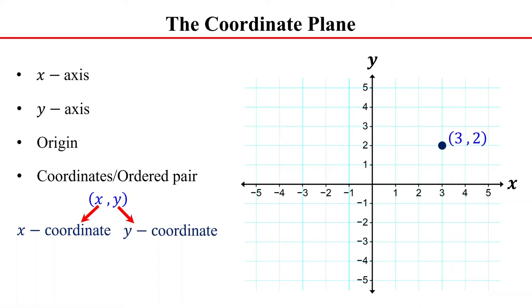Note that in an ordered pair, the order of the coordinates matters. For example, the point 3 comma 2 is not the same as the point 2 comma 3. They have different x-coordinates and different y-coordinates. That is why they have different positions on the coordinate plane.